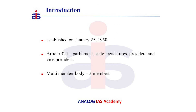Article 324 of the Constitution provides that the power of superintendence, direction and control of elections to parliament, state legislatures, office of president and vice president shall be vested with the Election Commission.